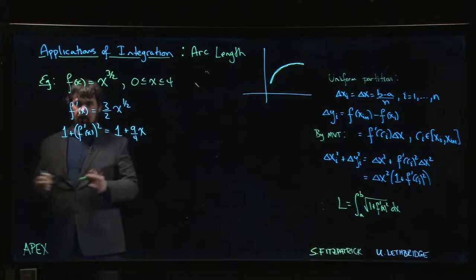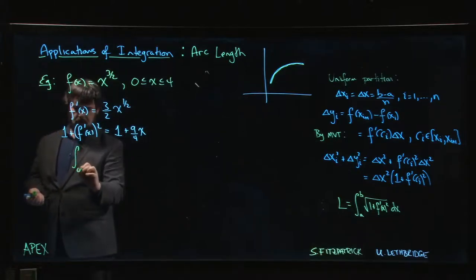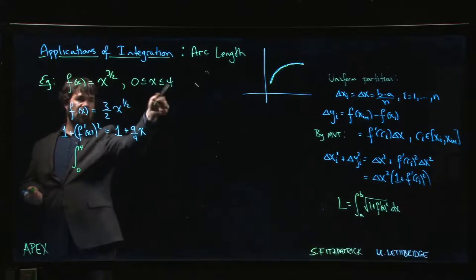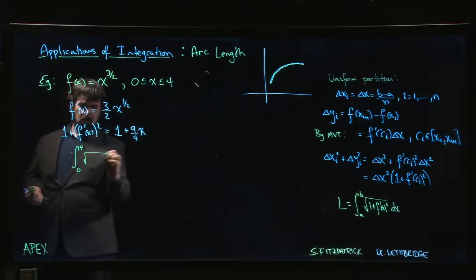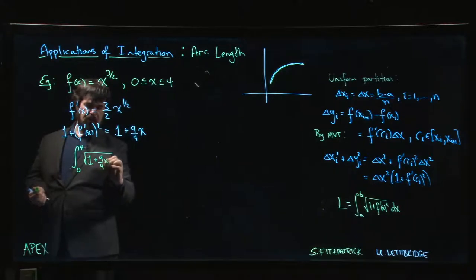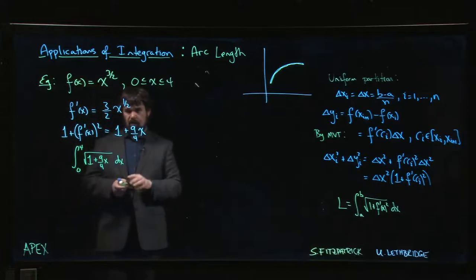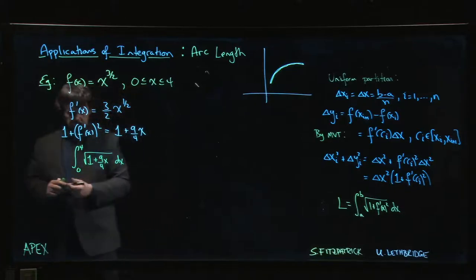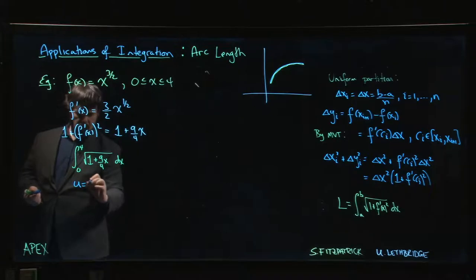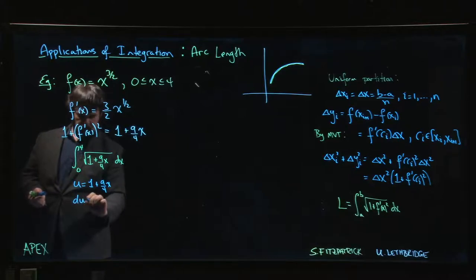So our integral, x should go from 0 to 4. We have the square root of 1 plus 9 over 4x, and we might as well set this up as a u substitution. We'll let u equal 1 plus 9 over 4x. That means that du is 9 over 4 times dx.